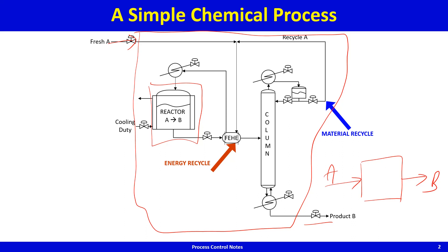This minimizes the raw material A consumed per kg B produced. Similarly, when you have energy recycle, the stream to be heated to the reactor temperature is now hotter because it has been preheated in the feed-effluent heat exchanger. Therefore, this heater is smaller and uses less steam — the utility consumption rate is lower. The amount of steam consumed per kg fresh A feed processed or per kg B produced reduces because of energy recycle.